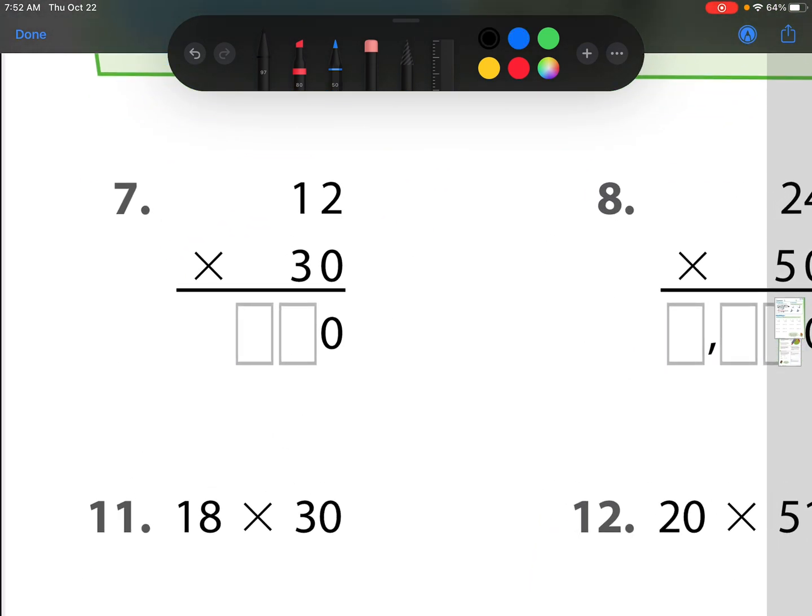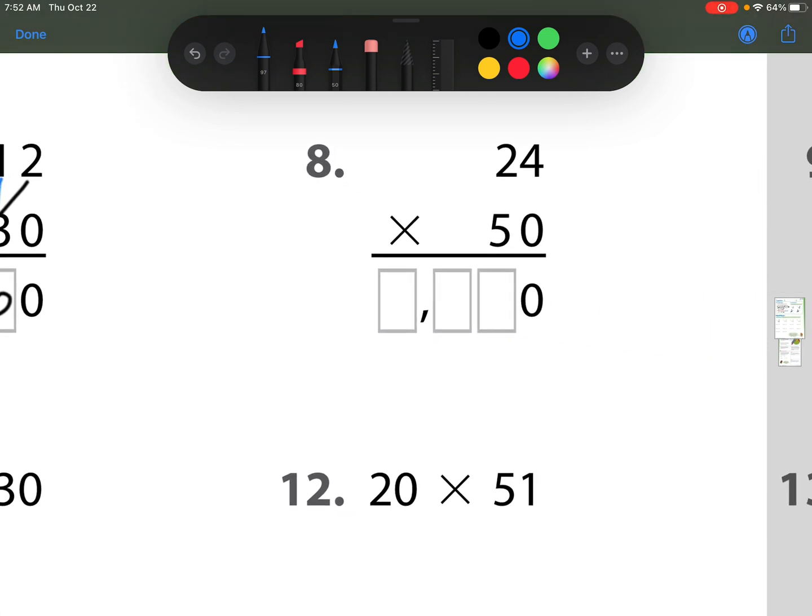Number 7. We have 3 times 2 is 6. And then we have 3 times 1 is 3, for 360. Number 8. 5 times 4 is 20. So I put the zero down. Remember, the 2 does not go here. It goes up top, so we can regroup it. And then we have 5 times 2 is 10, plus 2 is 12. 1,200.